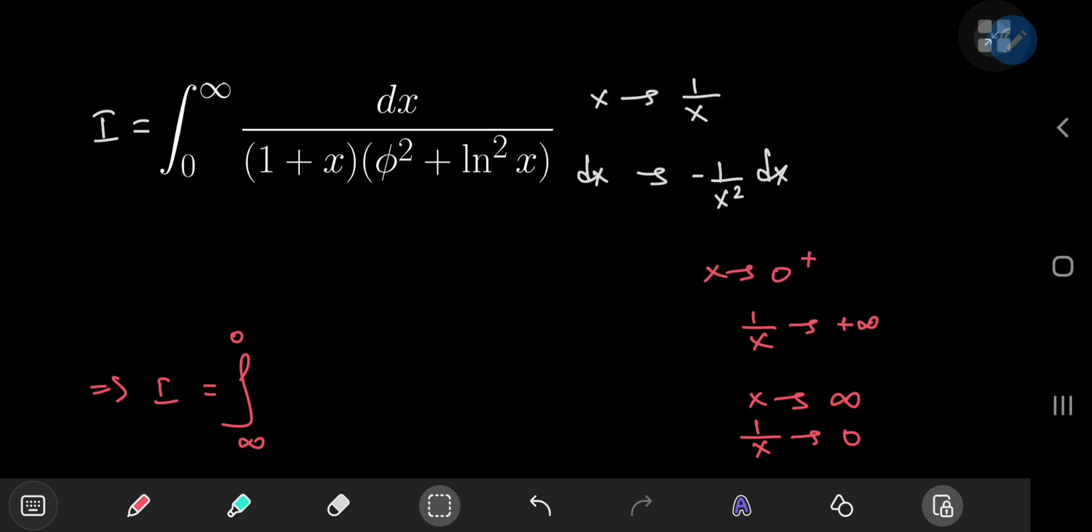So we have the integral from infinity to 0, which is quite weird, of negative 1 by x squared dx divided by 1 plus 1 by x times phi squared plus, where phi is of course the golden ratio, plus the square of the natural log of 1 by x.